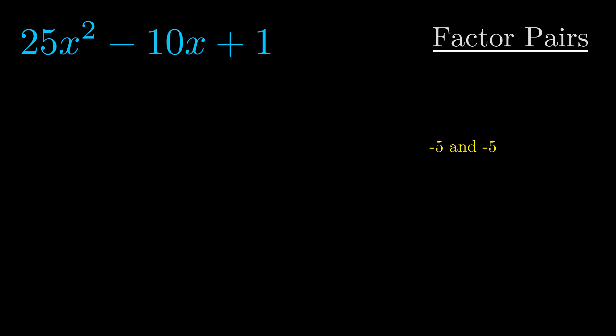Now once we have this factor pair, what we want to do is use it to split up the b value.